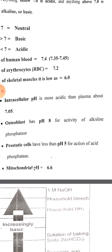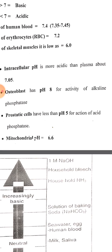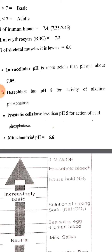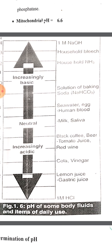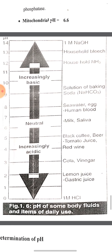Osteoblasts have a pH of 8 due to the activity of alkaline phosphatase; alkaline phosphatase acts as a marker for bone diseases. Prostatic cells have a pH less than 5 due to the activity of acid phosphatase, which acts as a marker for prostatic cancer. Mitochondrial pH is 6.6.